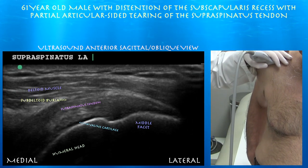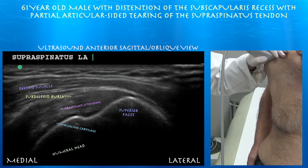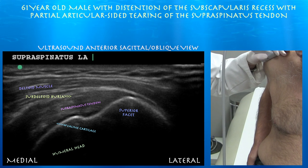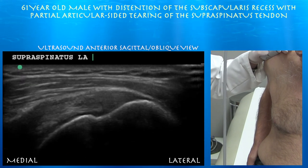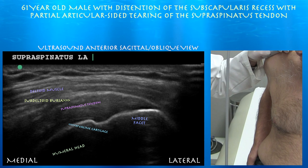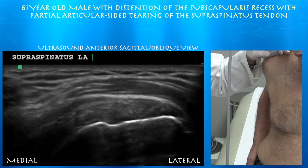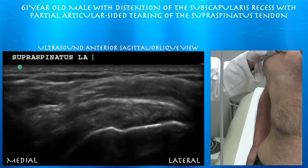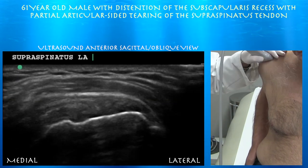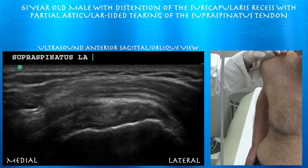Here you can see posteriorly how it's inserting into the middle facet, which is flatter than the superior facet. At this view we really don't see any tears in the supraspinatus tendon even at the anterior distal tendon. Here's that flattened middle facet as you go posteriorly. Essentially the very distal anterior supraspinatus tendon did show some signs suggestive of partial articular-side tearing, but it certainly doesn't look like a full thickness tear based on ultrasound, which is good.